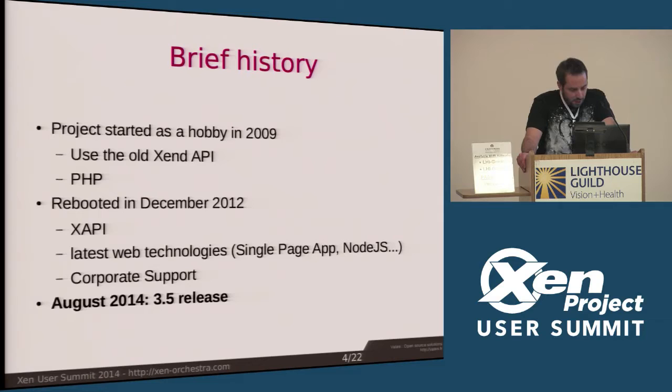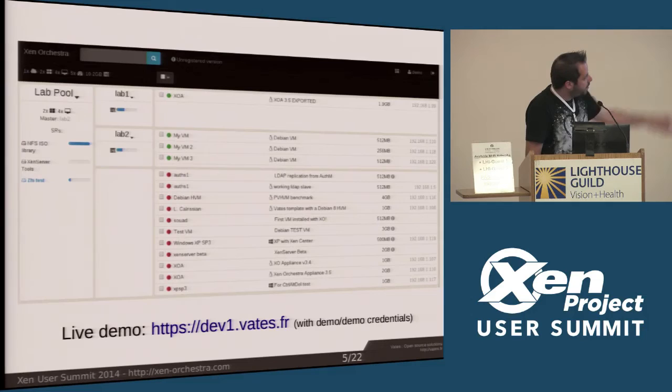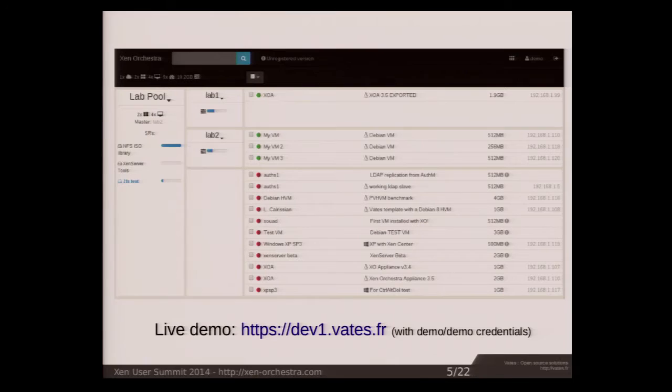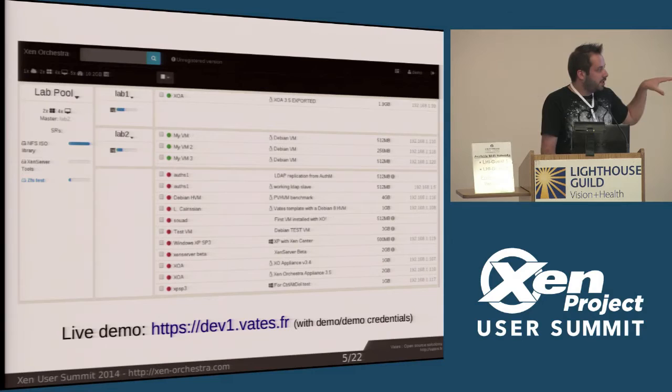Recently, one month ago, we released the latest version, 3.5. As you can see, it's the home view. If you want to see it live, there is a demo running on HTTPS dev1.vates.fr. You need to provide credentials — it's demo/demo — so you can get an eye on it. It runs on our lab in our offices in France, and we have a very poor connection, so if it's slow, that's normal.